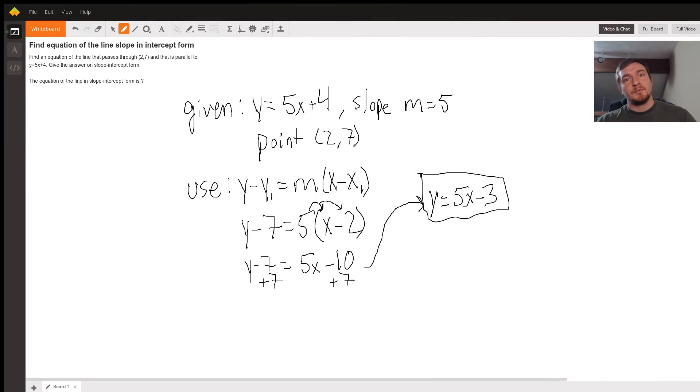Good evening, Zoss. Hey, my name is Fred Mastuta here with Wyzant. I just wanted to help you out with this question here. So it looks like you have to find an equation of the line in slope-intercept form for a line that passes through (2,7) and is parallel to the line y equals 5x plus 4. And the answer needs to be given in slope-intercept form.